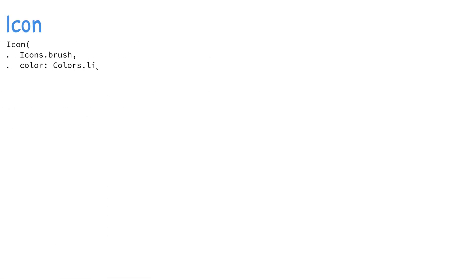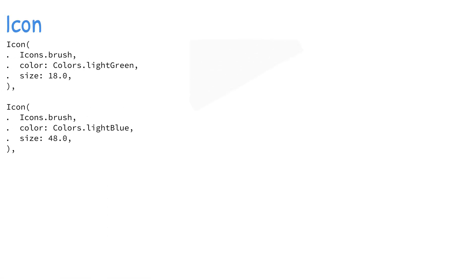The icon widget is drawn with a glyph from a font described in icon data. Flutter's icon dart file has the full list of icons available from the font material icons.